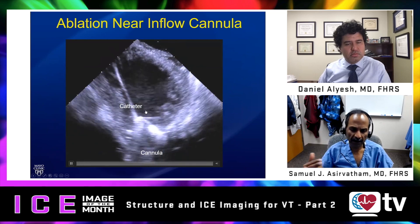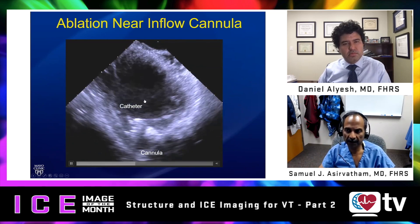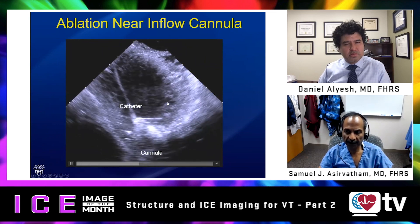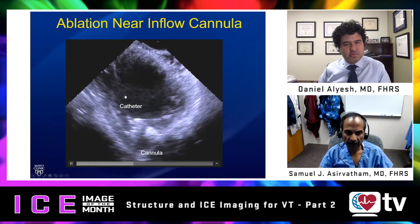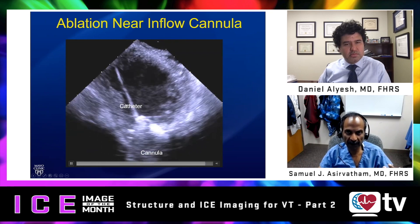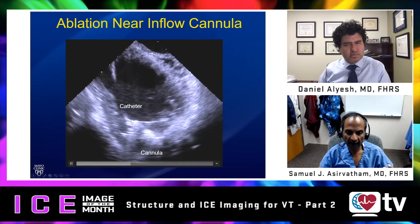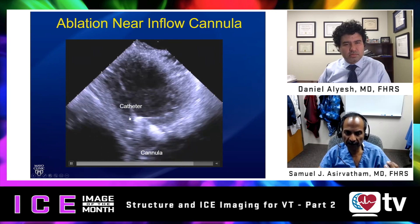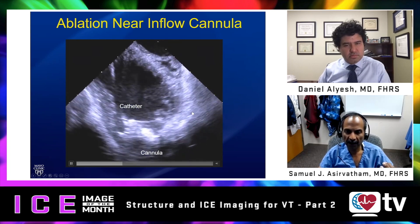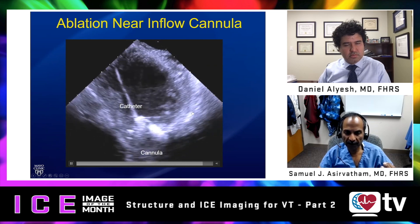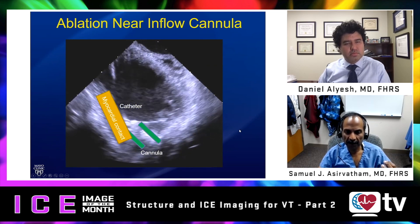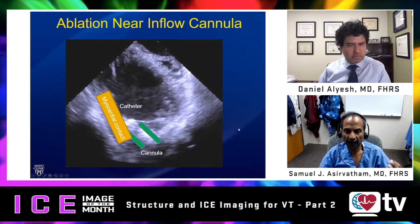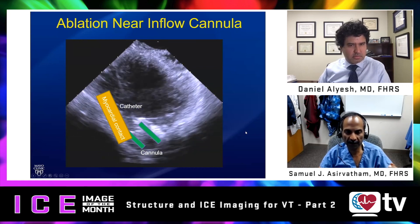Another location where the safety and confidence of ablation is improved is in LVAD patient VTs. Several issues arise here: movement from active suction from the LVAD, damage to the inflow cannula, and recognizing what is myocardium versus what is the cannula that you need to look at and ablate. Once the views are established with ICE, it becomes much easier to understand where we need to map and where we need to avoid while ablating these otherwise challenging arrhythmias.